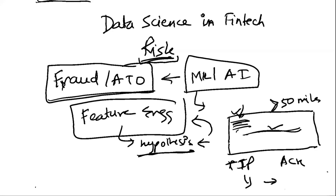Fraud is a classic application of unbalanced data — you're looking for a needle in a haystack, very small instances of something happening. These kinds of complex features will apply to a very small number of cases, but you'll find really strong correlations that way. Being willing to do hypothesis-driven feature engineering and spending enough time on it is one of the most important things when building a fraud model.